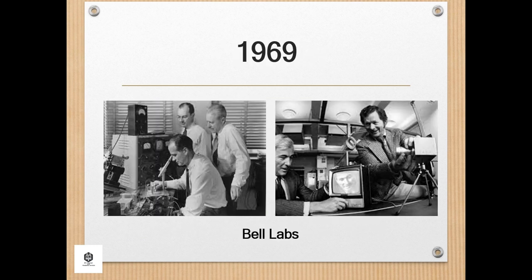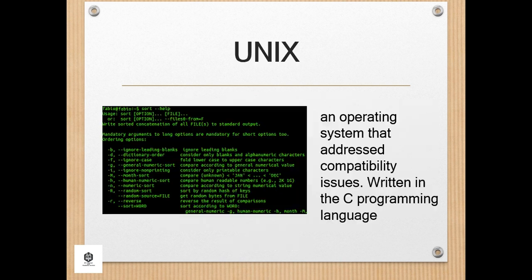During 1969, a group of developers at Bell Labs produced Unix, an operating system that addressed compatibility issues, written in the C programming language. Unix was portable across multiple platforms and became the operating system of choice among mainframes at large companies and government entities. Due to the slow nature of the system, it never quite gained traction among home PC users.